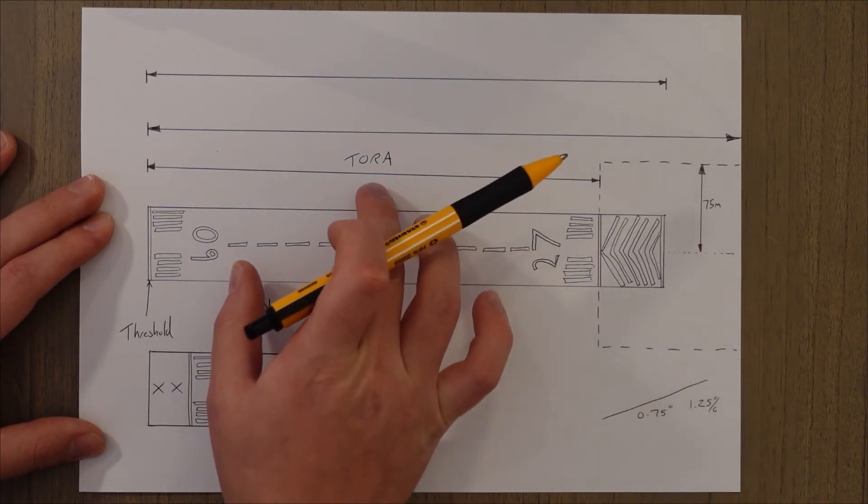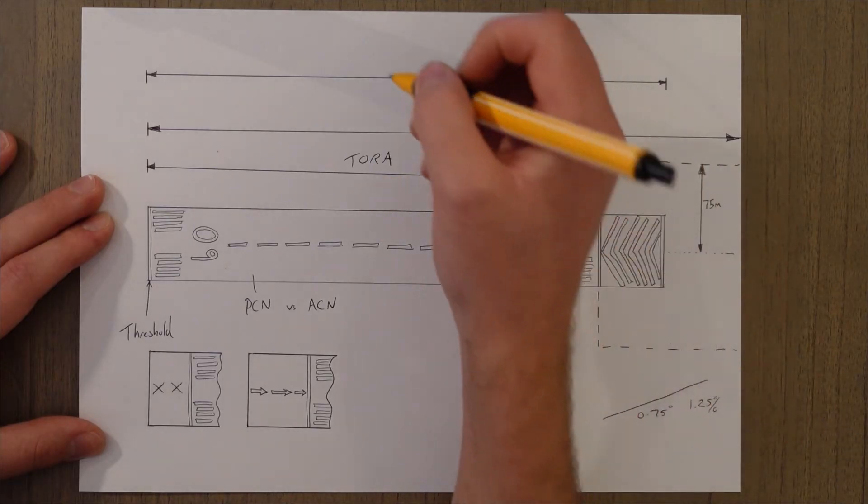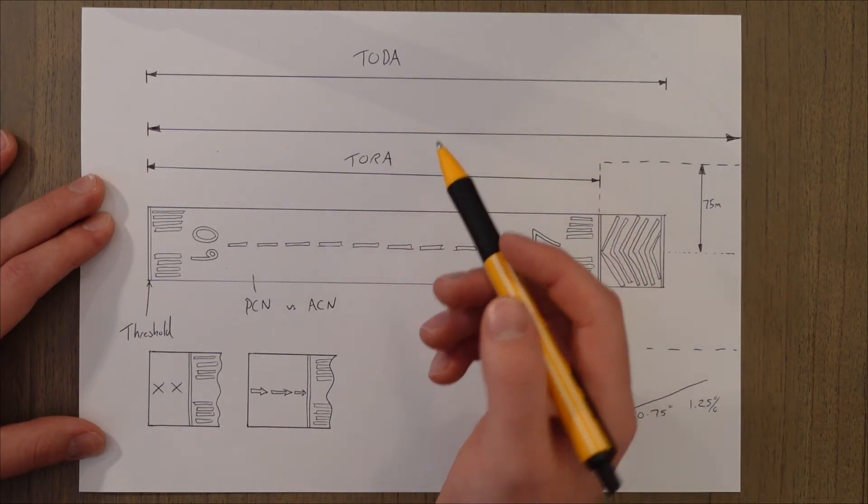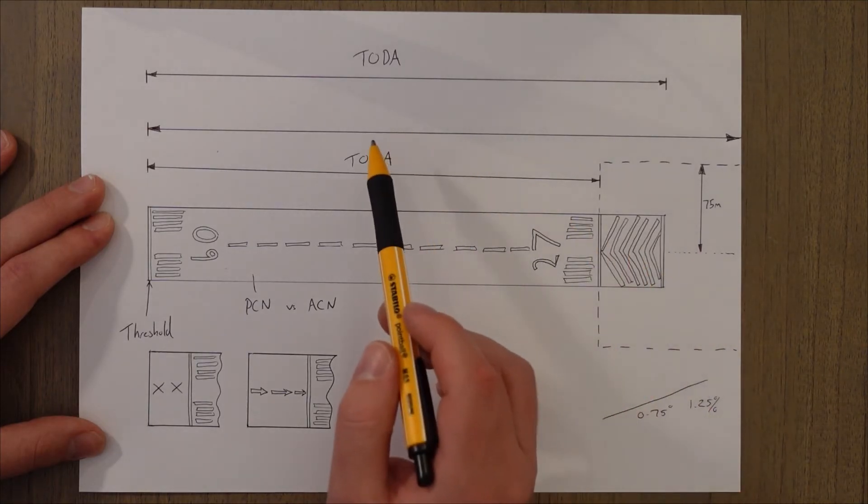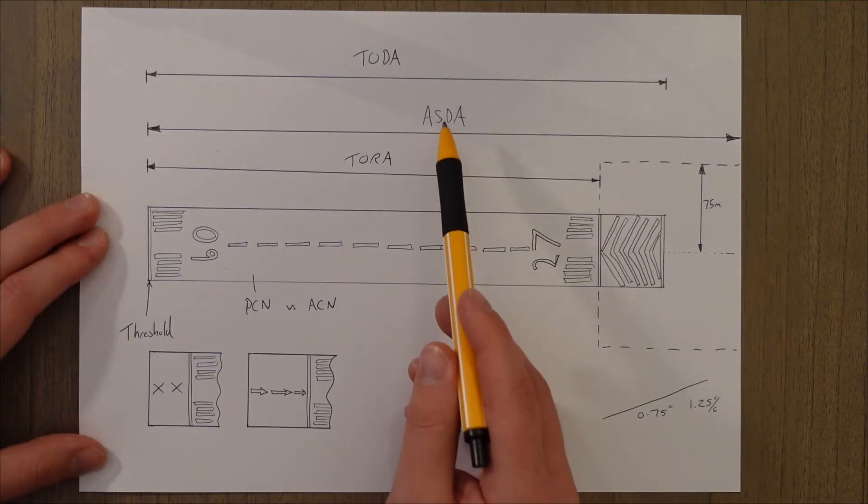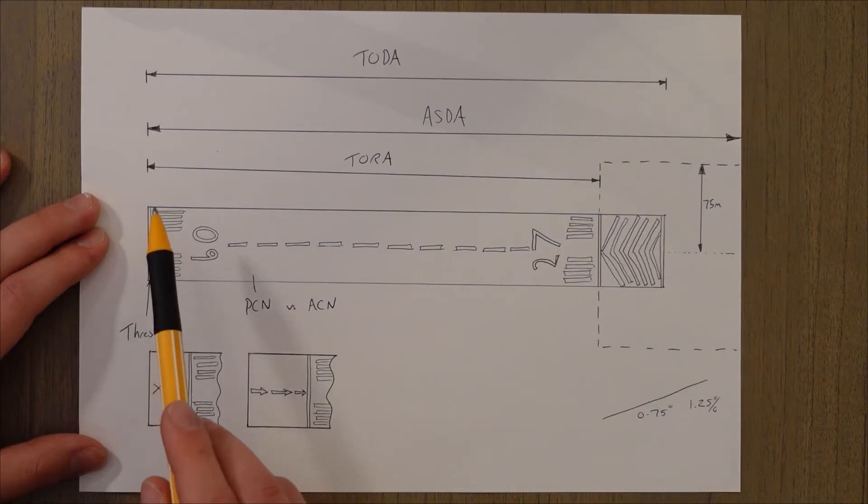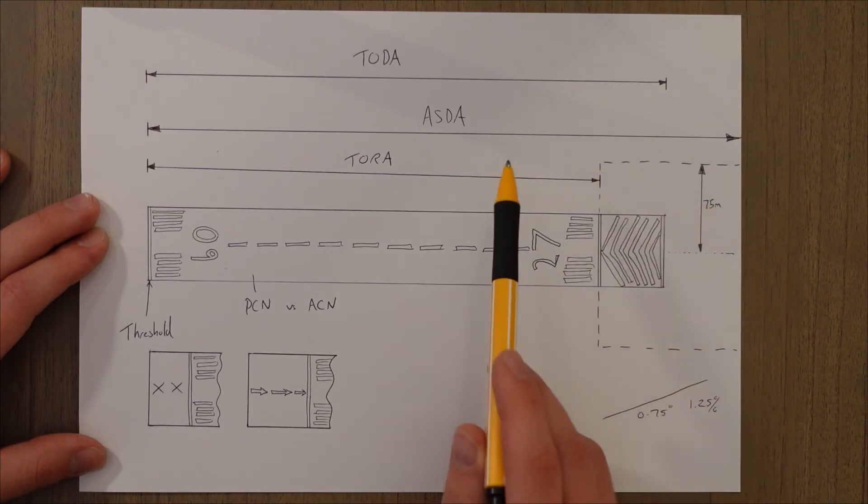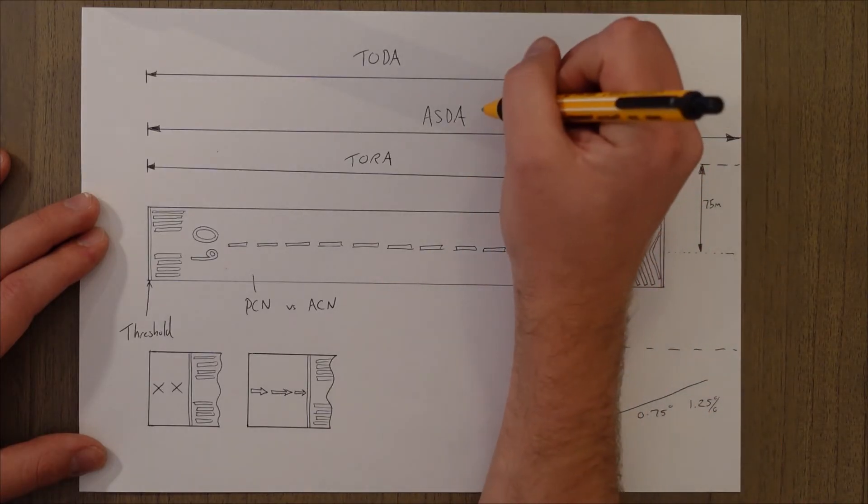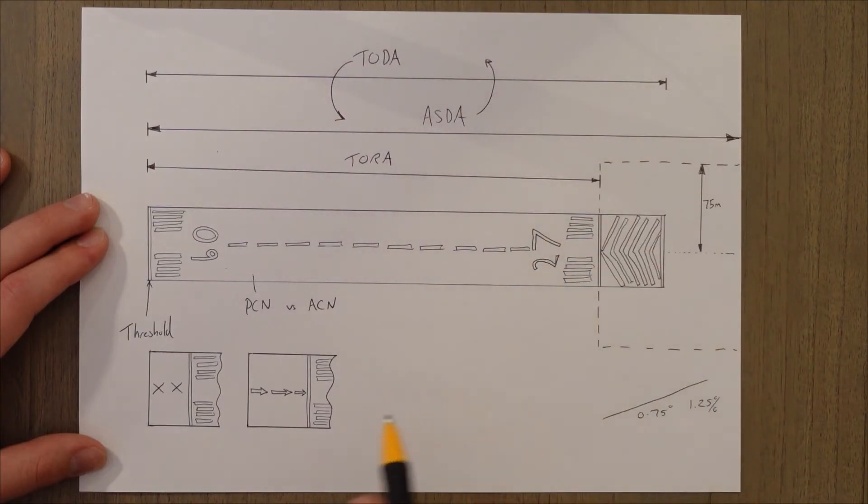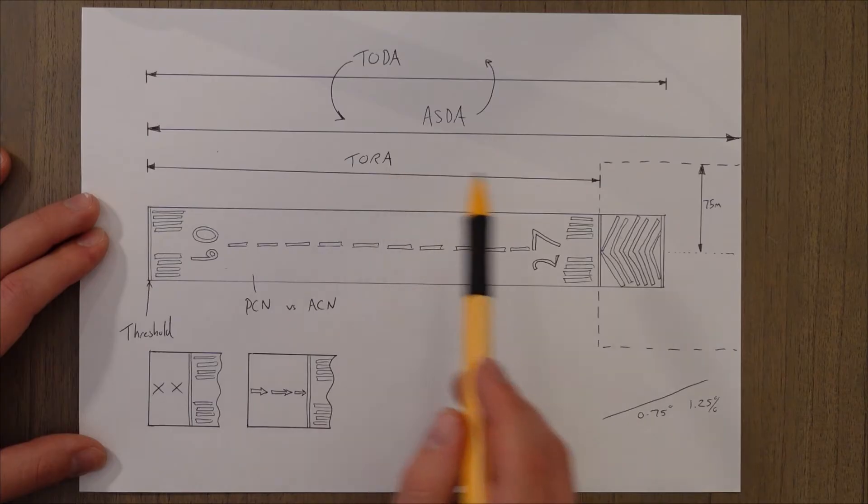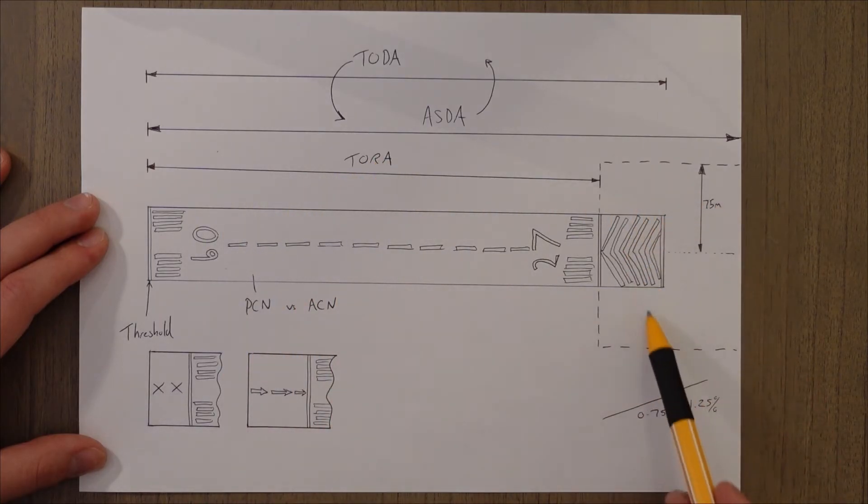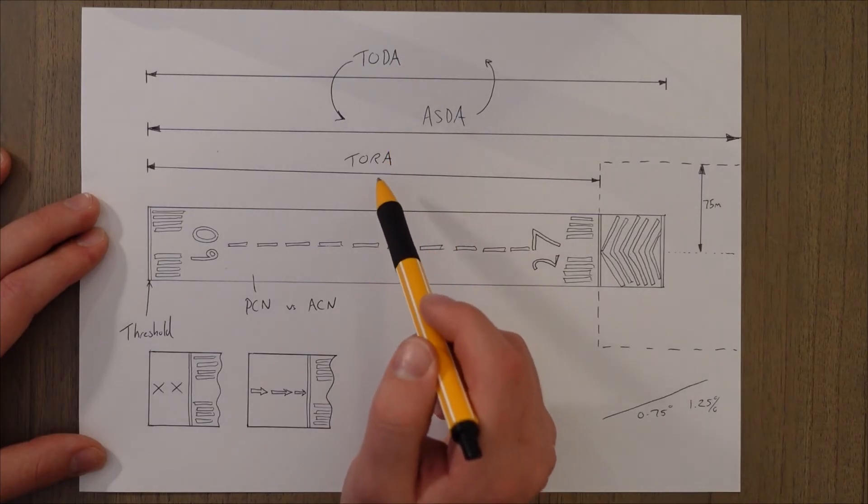So if we add our clearway to our TORA, we get the takeoff distance available, the TODA. So the TODA is either going to be the smaller of the TORA plus the clearway or 1.5 times the TORA. The ASDA is the distance on the runway from the start of the surface that can support an aircraft to the end of the surface that can support the aircraft in an emergency condition without risk of serious accident. And I've just realized that I've labeled them wrong. The ASDA should be this one and the TODA should be this one. Hopefully that makes sense. So the ASDA is the TORA plus the stopway, and the TODA, the takeoff distance available, is the takeoff run available plus any clearway up to a maximum of 1.5 times the TORA.